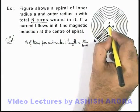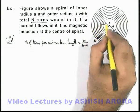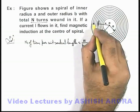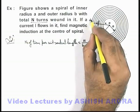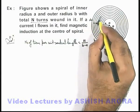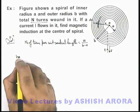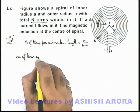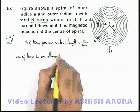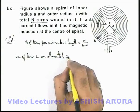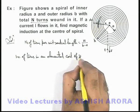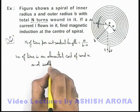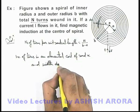So to find the magnetic induction at point o, let us consider at a distance x from o a small elemental coil which is of width dx. Now if we consider a coil of width dx, then we can see the number of turns in an elemental coil of radius x and width dx.